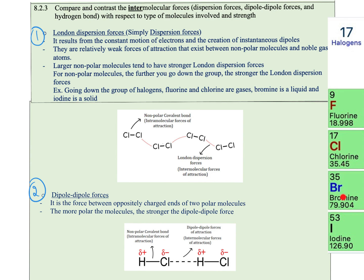London dispersion forces determine how close or how far the particles of fluorine, chlorine, and other molecules are from each other. If you have strong attractions, the molecules will be closer and more likely to be solids or liquids. But if you have weaker London dispersion forces, they are mostly going to be gases.